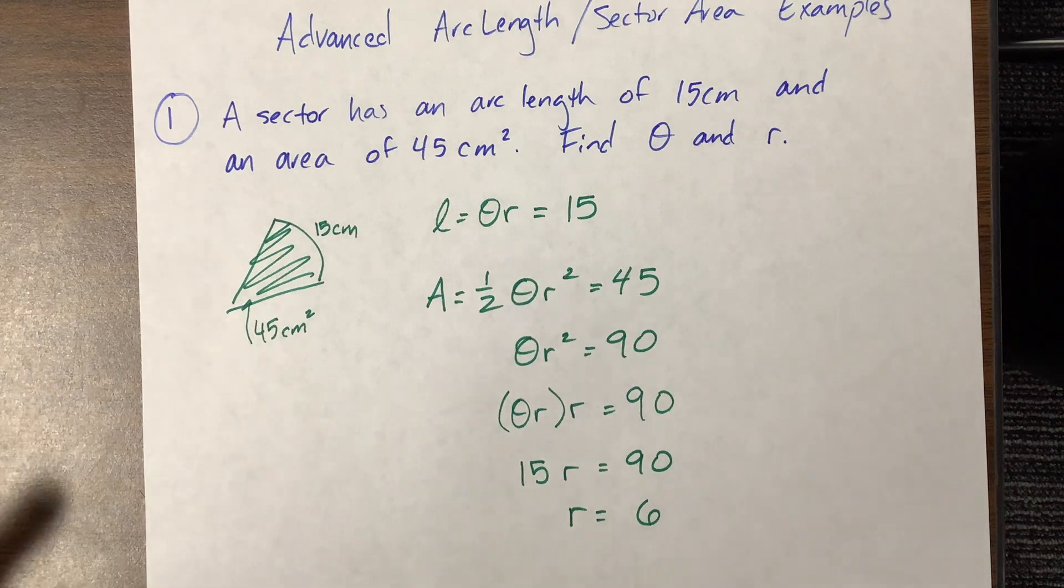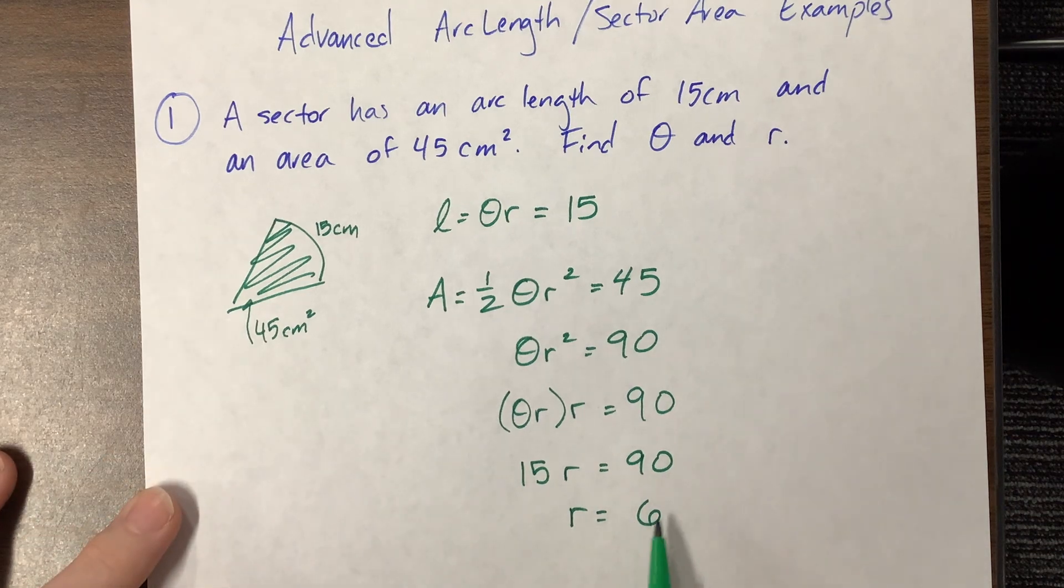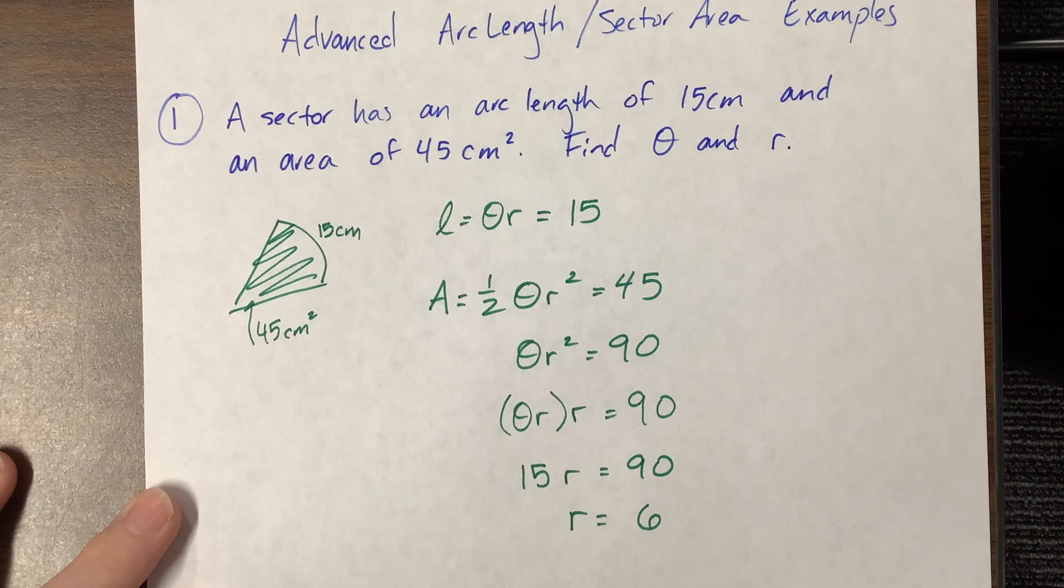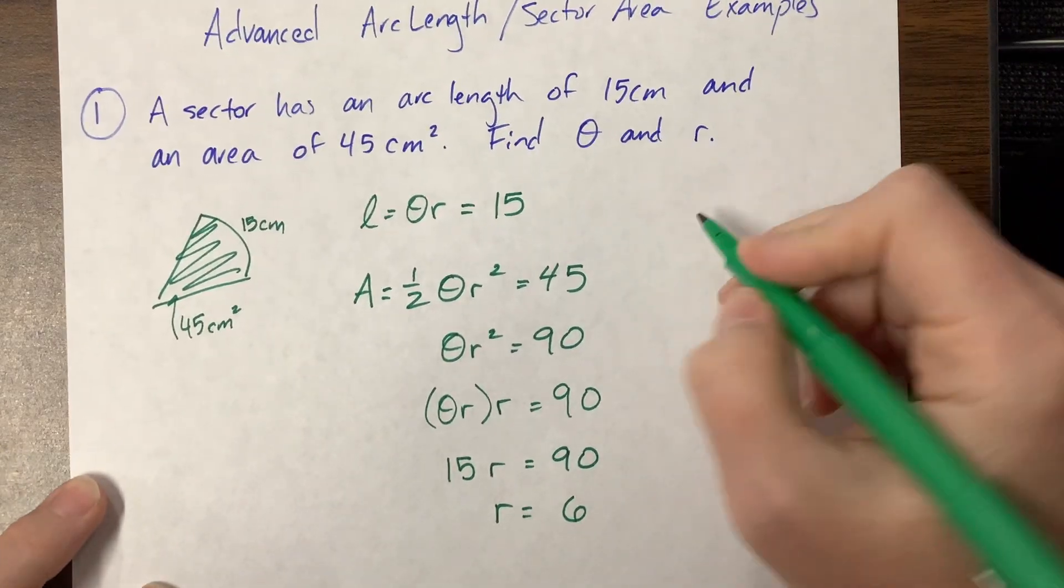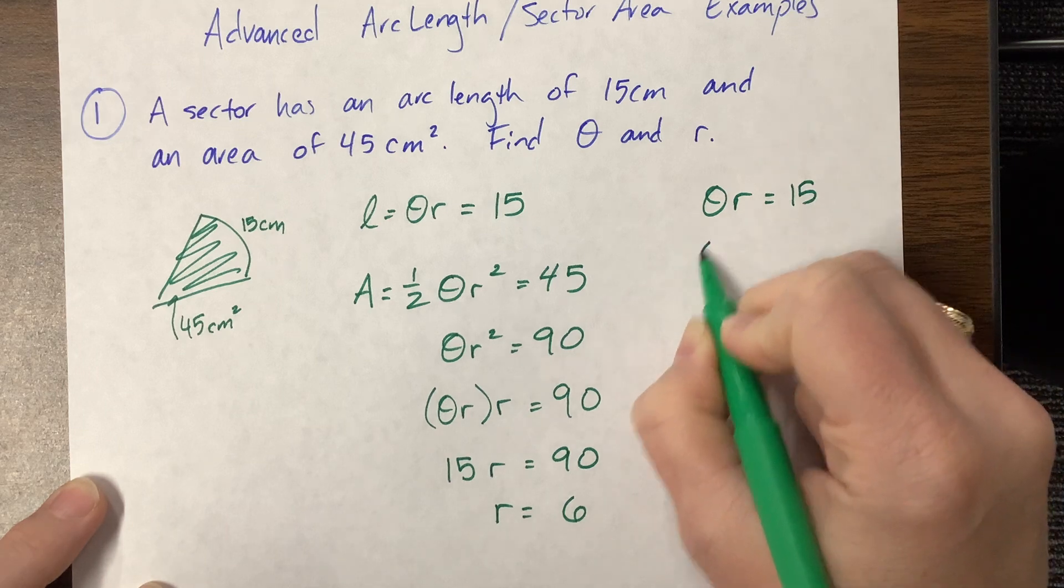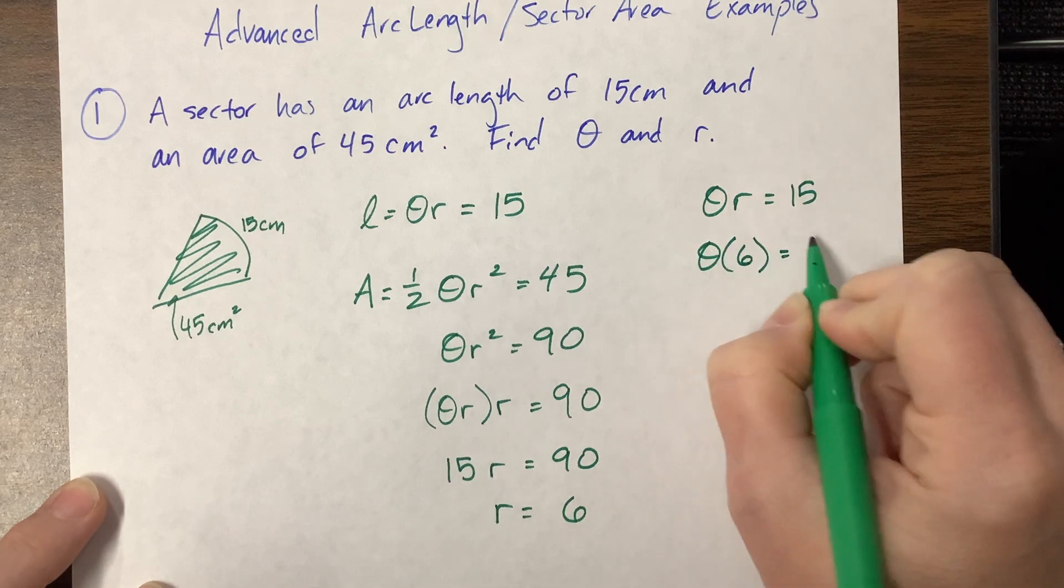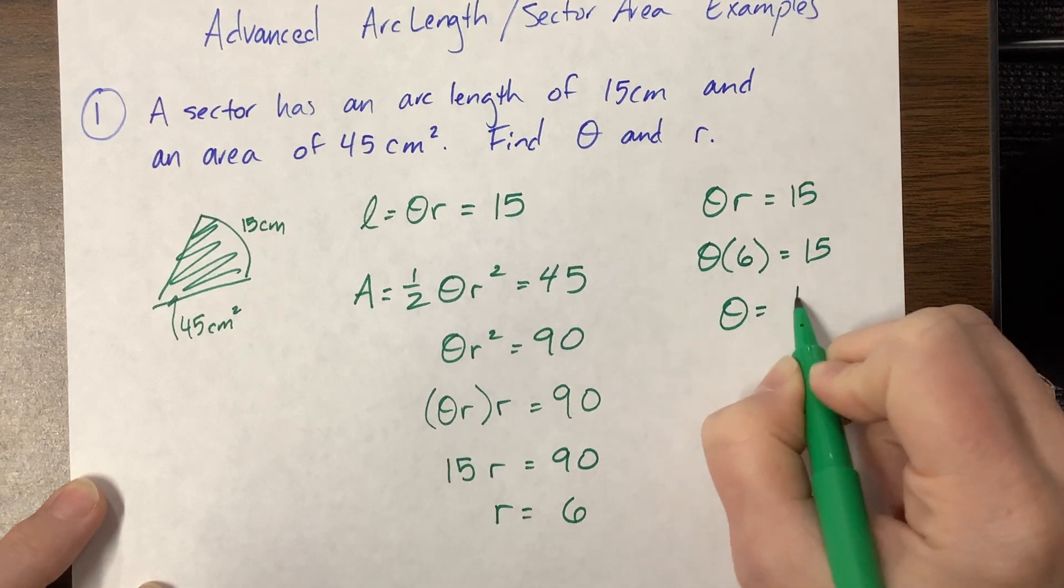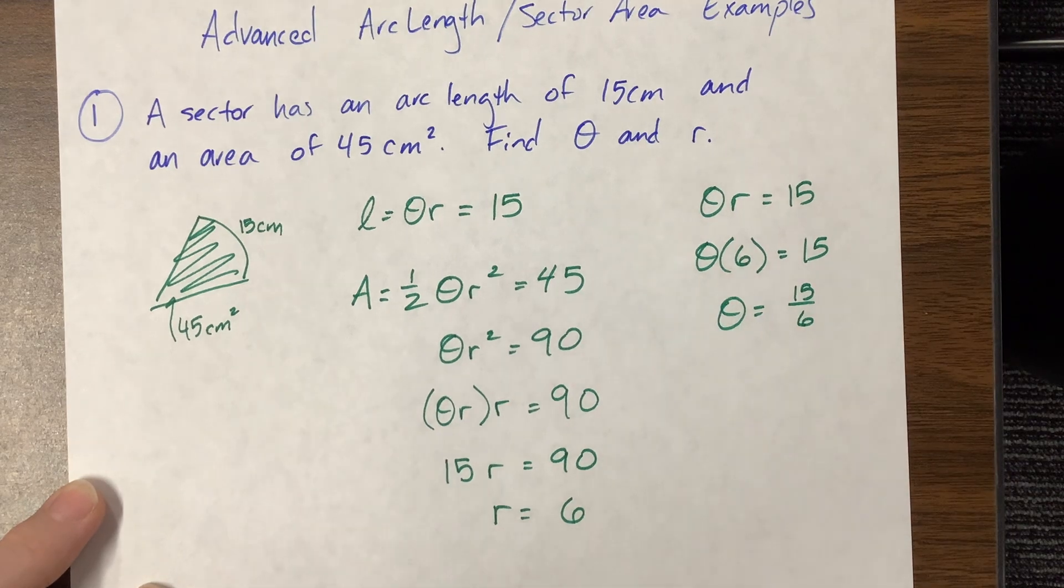So now all I need to do is to go back into one of my original equations, plug that in and solve for theta. So this one is easier, theta r is equal to 15. We just said that r was equal to 6. 15 divided by 6, I can reduce that fraction,